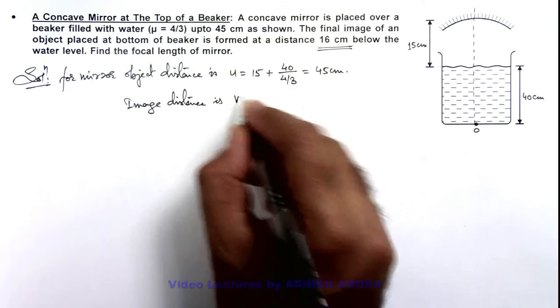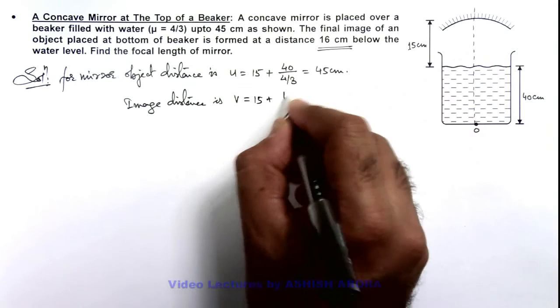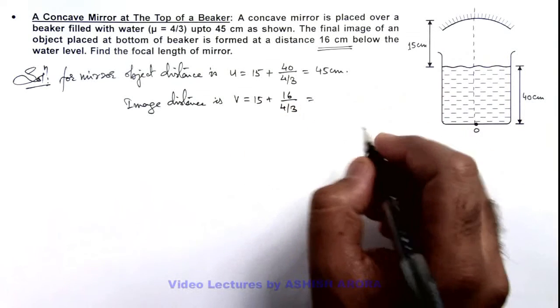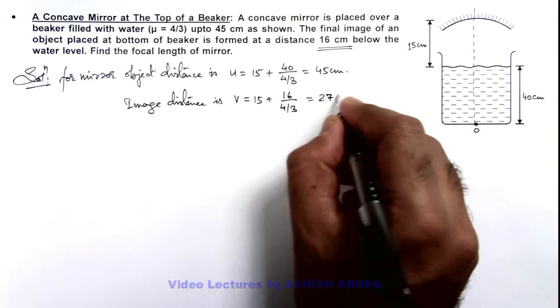So here the image distance from mirror can be written as 15 plus 16 divided by 4 by 3. So here it will be 12 plus 15, it is 27 centimeter.